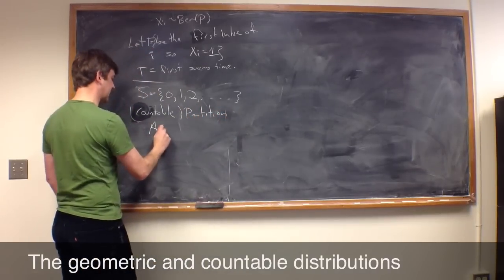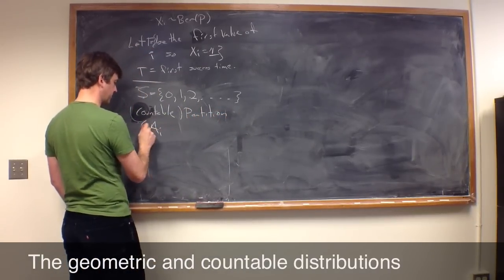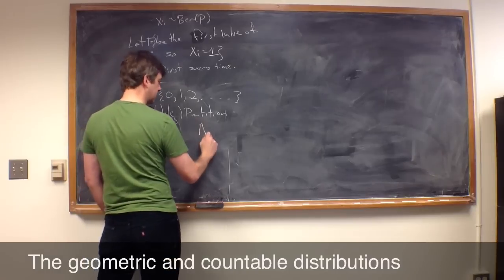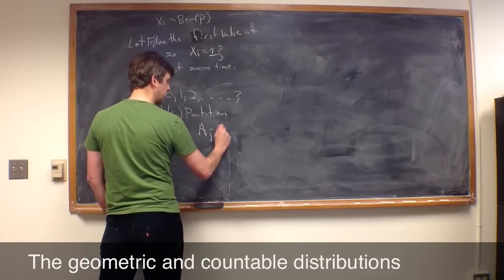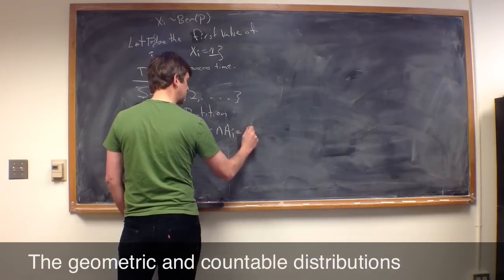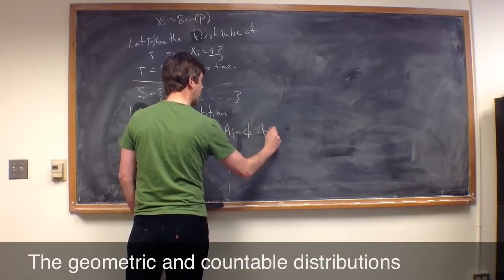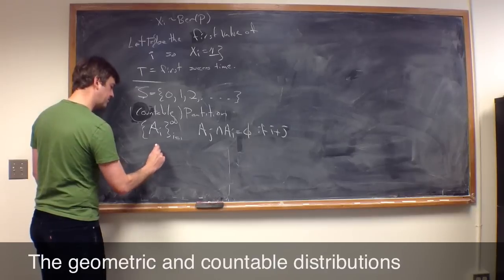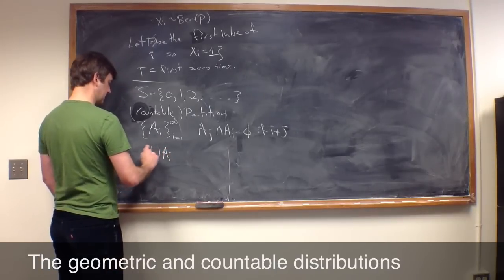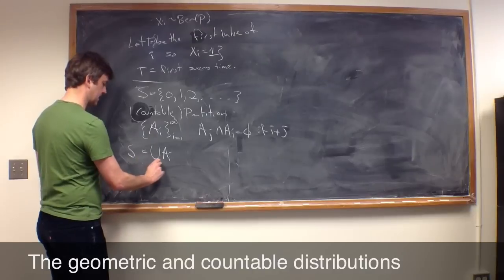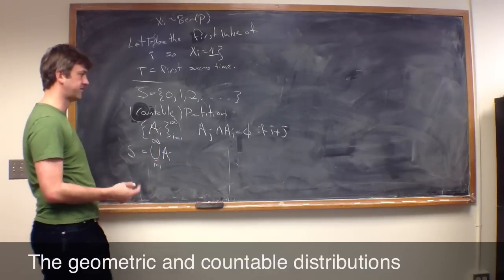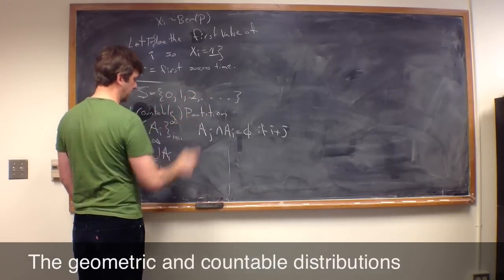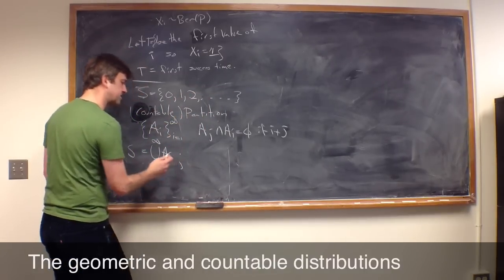So now we have a countable partition. It's just a collection of sets Aij, a whole collection of sets Aij, maybe i equals 1 to infinity now, such that Aij intersect Aik is equal to the empty set if j is not equal to k. So they're pairwise disjoint, and yet the union of all the Aij is equal to our full space. In this case, for instance, a partition could just be each individual integer, or maybe some subset.